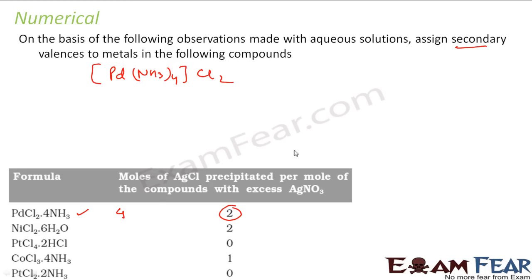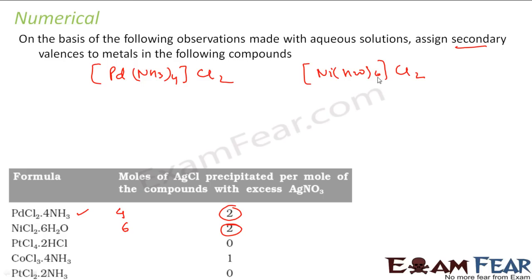For NiCl2·6H2O, it gives two chlorine molecules in solution, so two chlorines are outside. The remaining six water molecules are inside. So nickel is linked to six water molecules, giving a coordination number of 6. Note that nickel will always have coordination number 6. For the next compound, it gives zero moles of chlorine — so everything is inside: PtCl4 and Cl2, giving 4+2 = 6. The coordination number is 6 and secondary valence is 6.